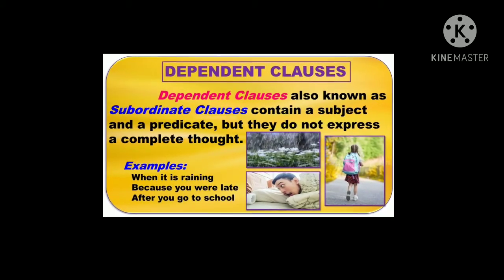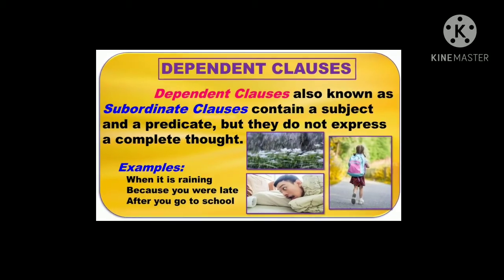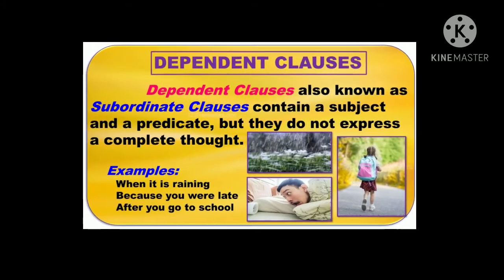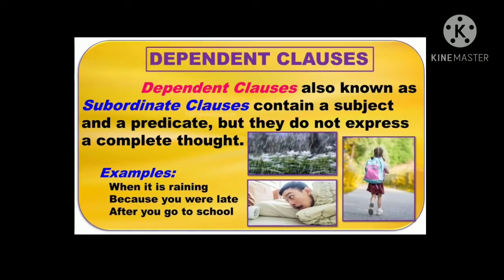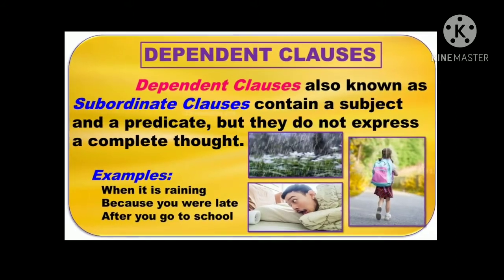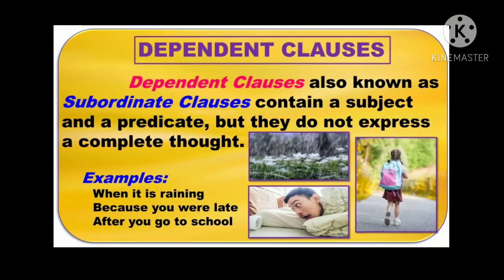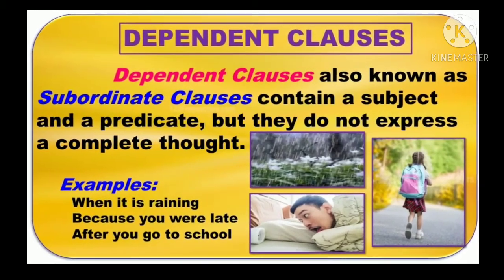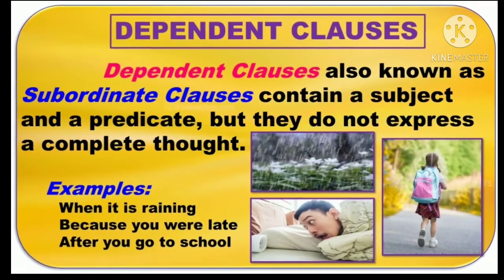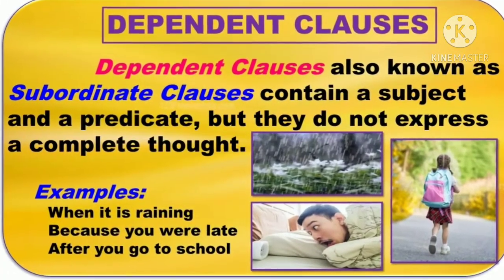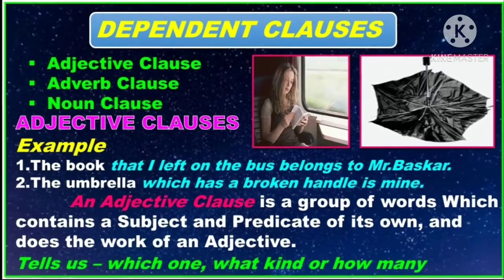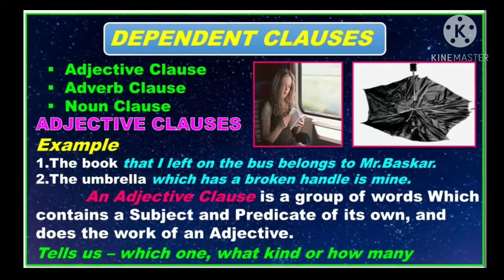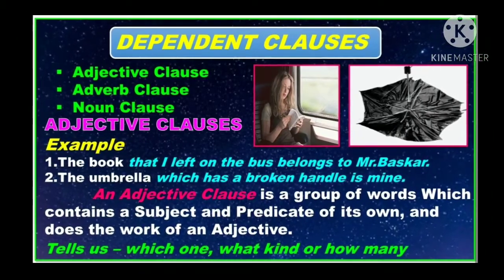Dependent clauses contain a subject and a predicate in a sentence, but they do not express or give a complete meaning or thought when they stand alone. So they need a main clause to give a complete meaning. Dependent clauses are divided into three parts: adjective clause, adverb clause and noun clause.